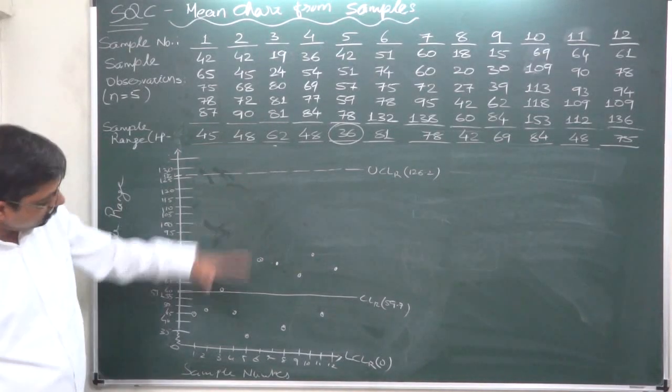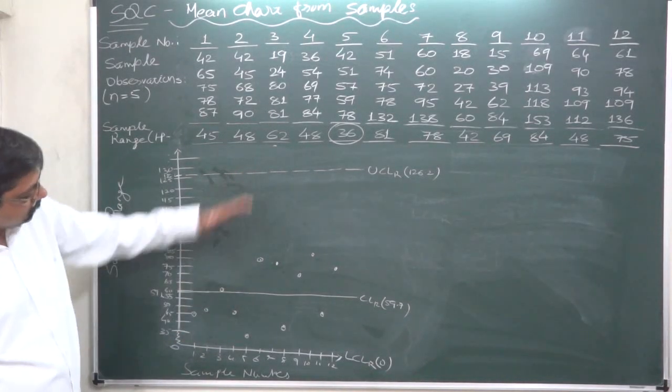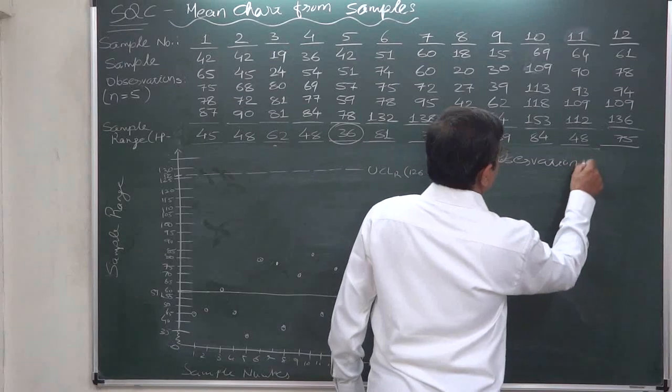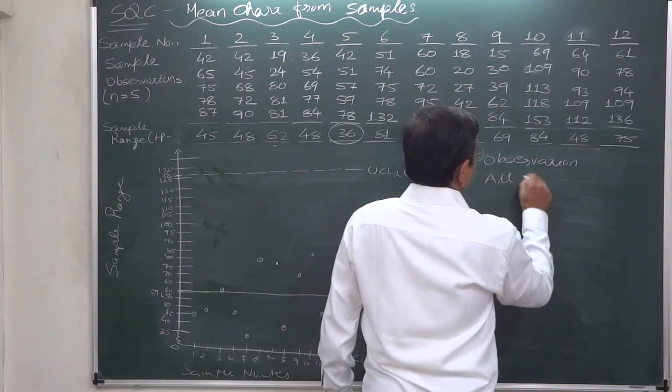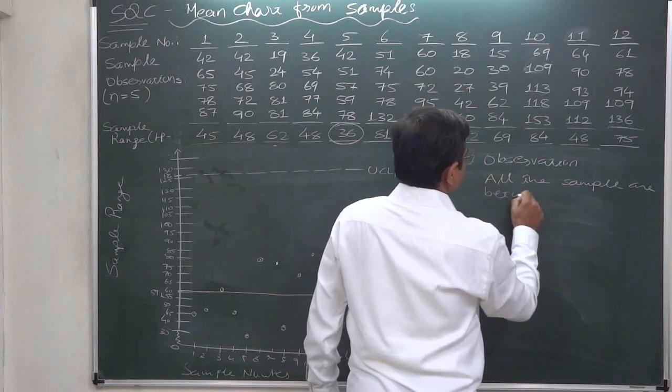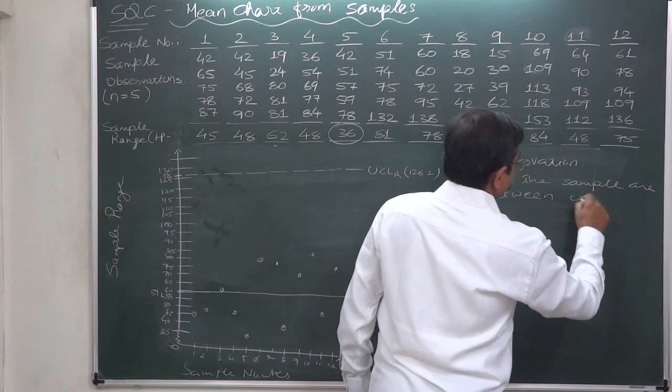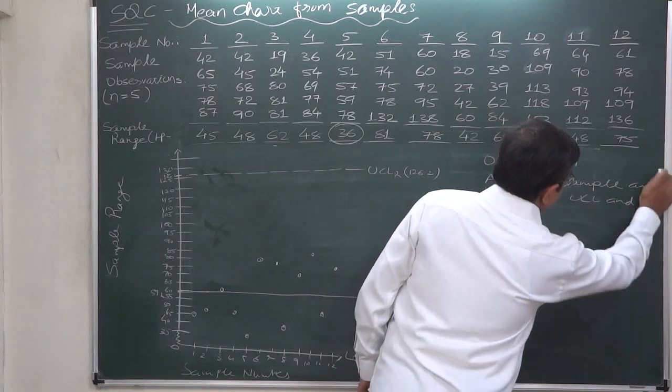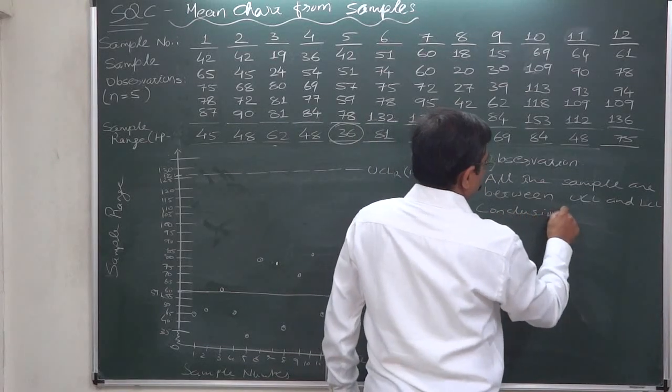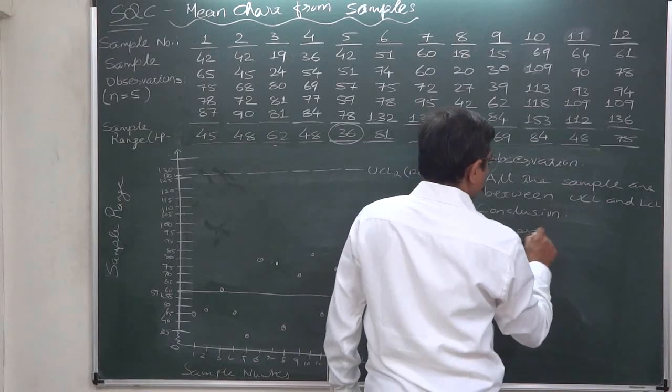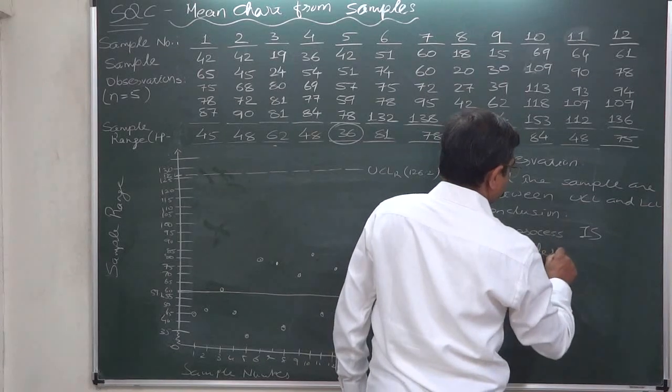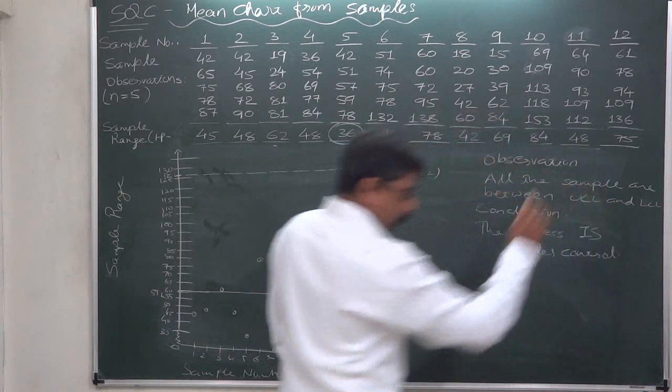This is the situation. As we can see, all the sample points are within the upper control limit and lower control limit. Very easy observation. All sample points are between the upper and lower control limits. So the conclusion would be: the process is under control.